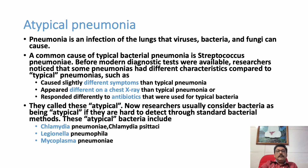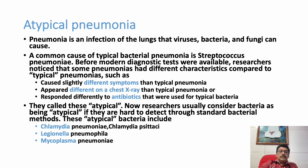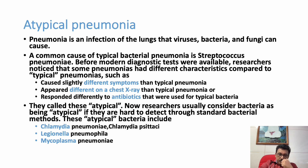Typical pneumonia features include cough, rusty or blood-stained sputum, and high-degree fever with chills — these are called typical findings. However, there are some pneumonias where you don't find these typical features like high-degree fever, chills, rigors, or severe cough with blood-tinged sputum.